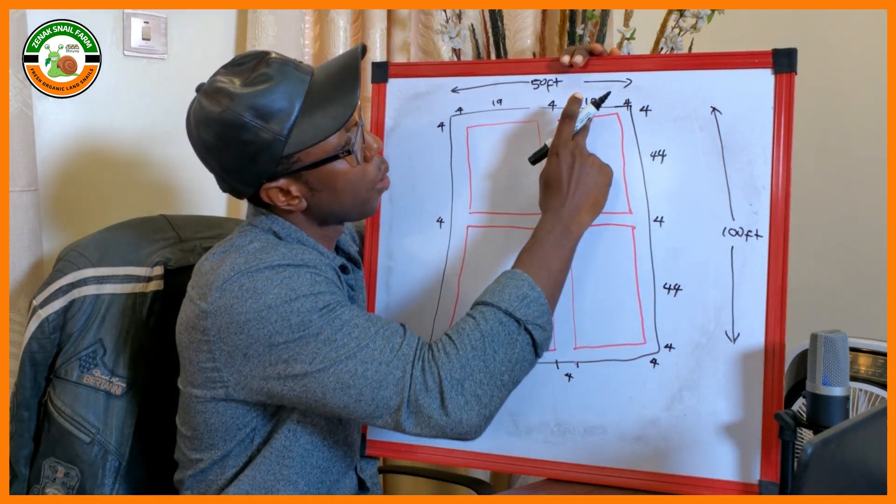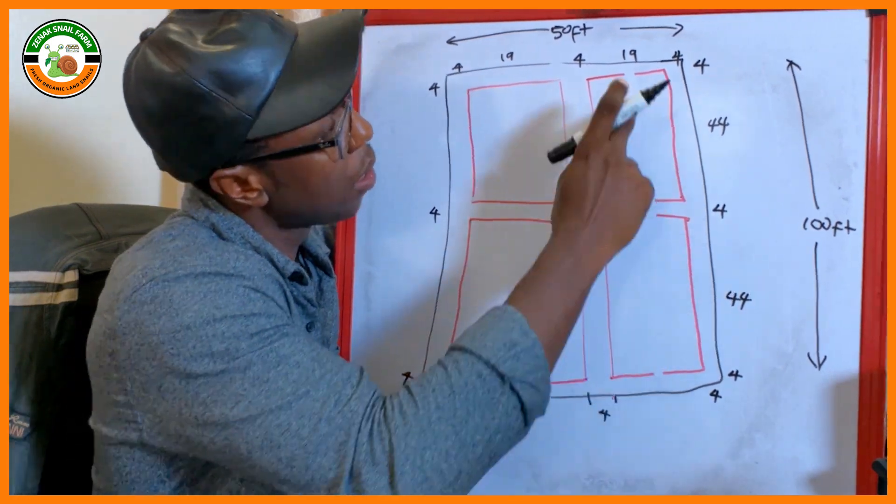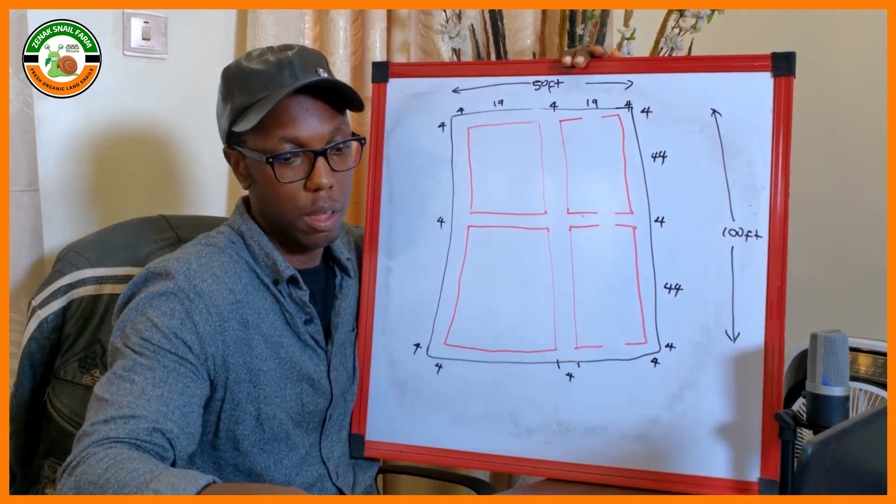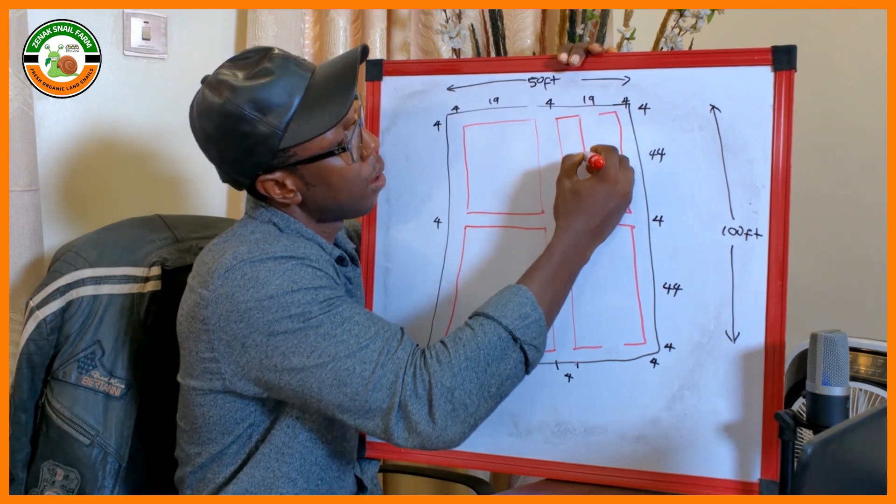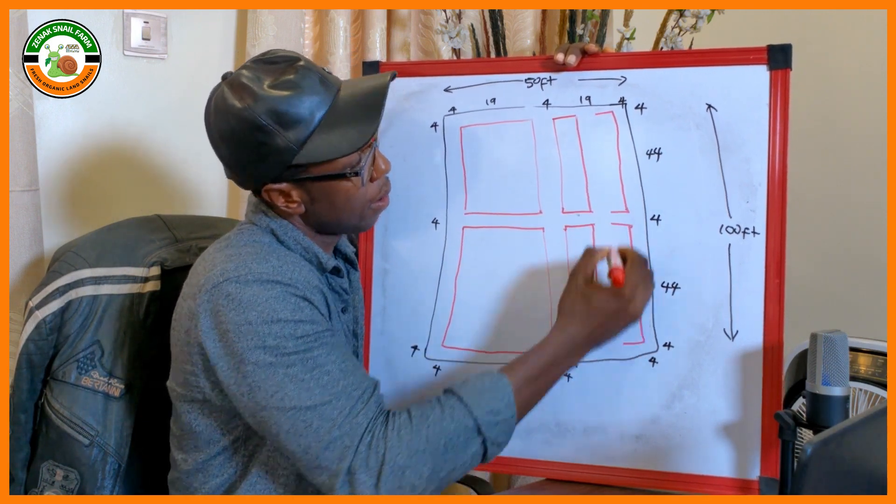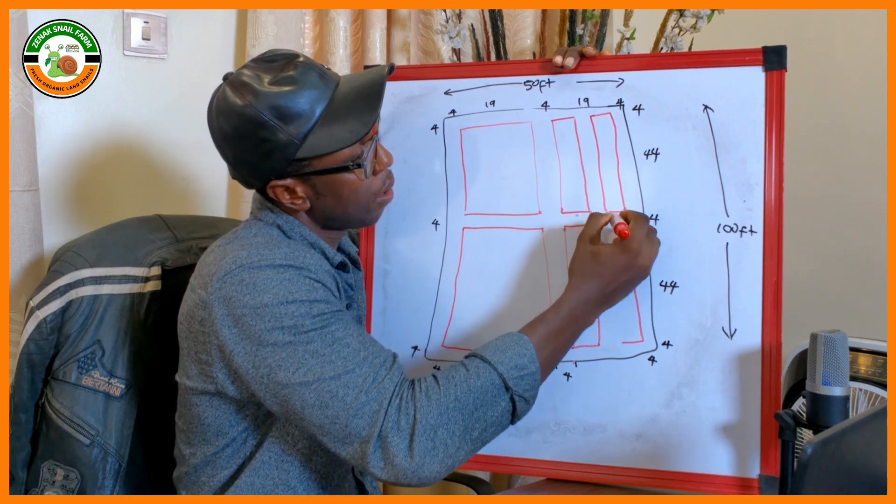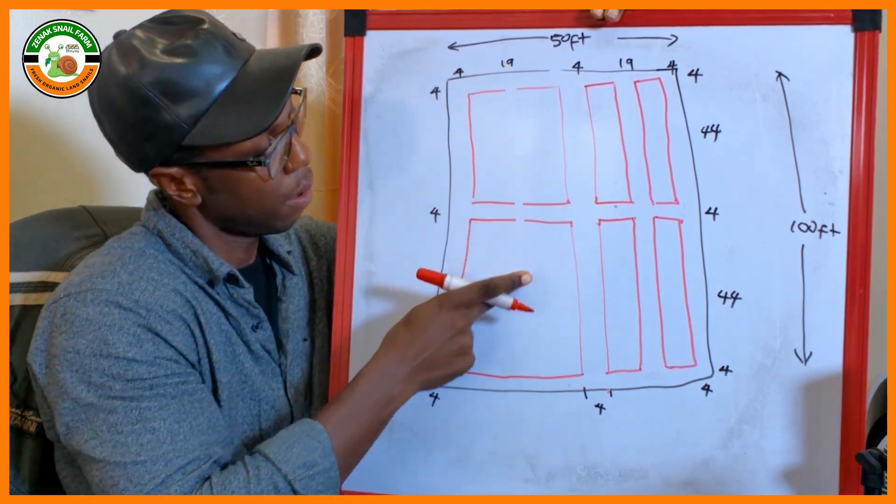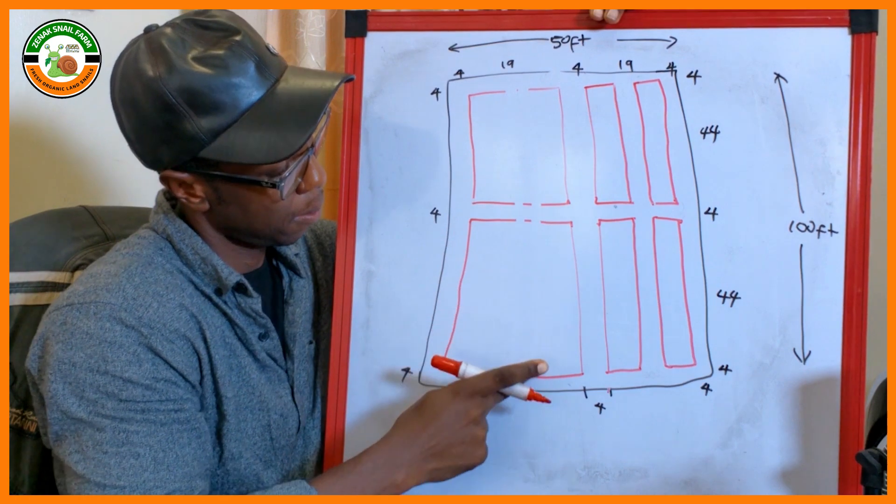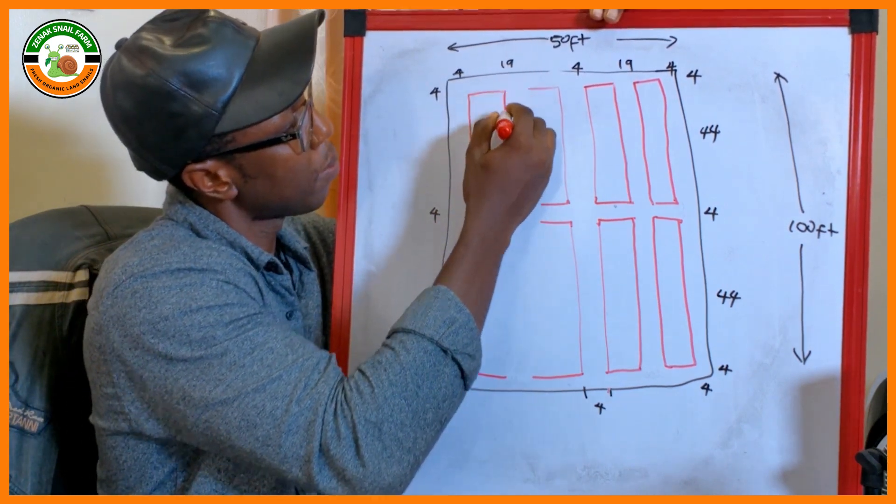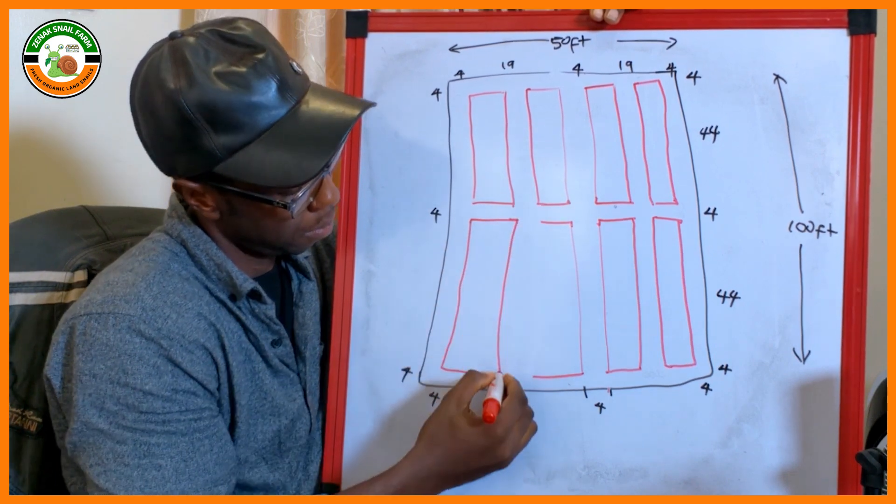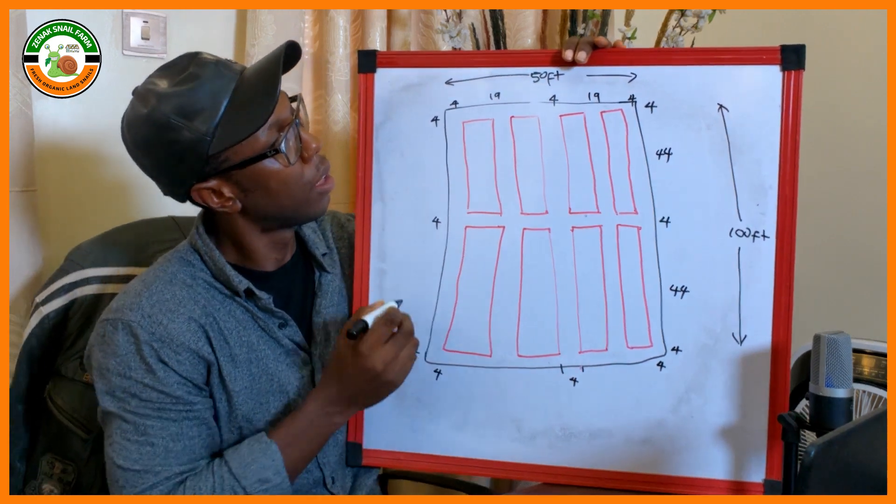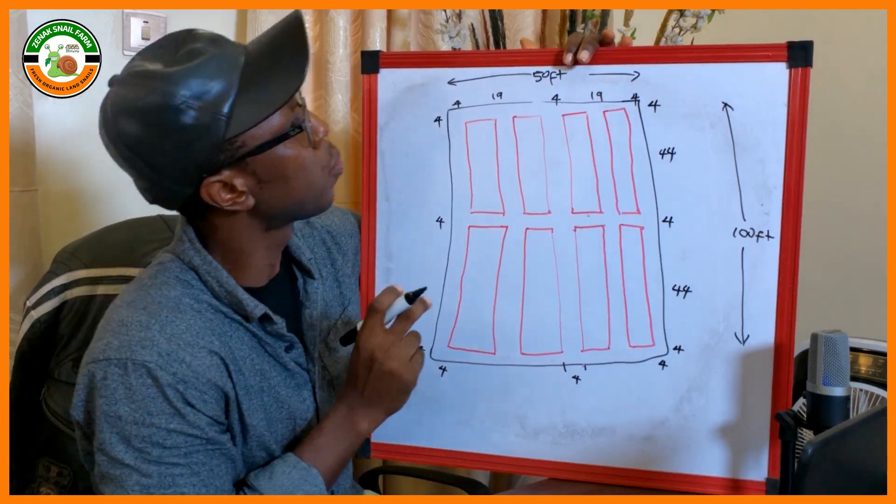So let's add a walkway, and then we enclose it. We do the same here. Now once we have this, remember the walkway is 4 feet.